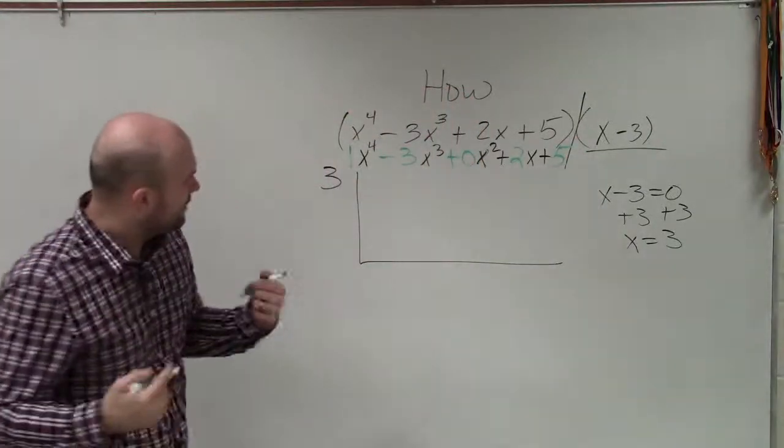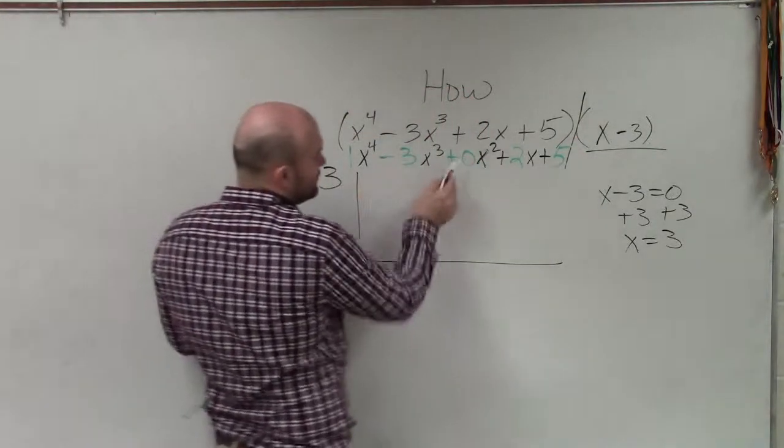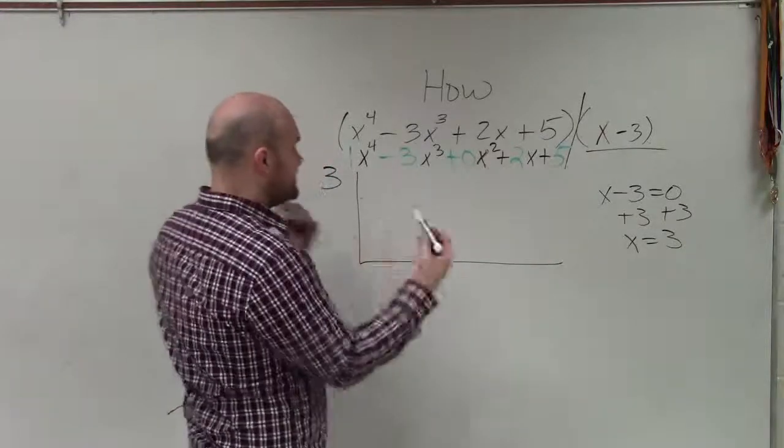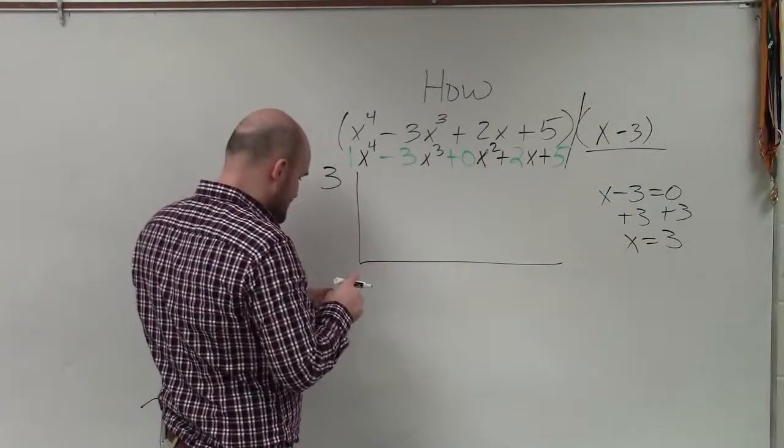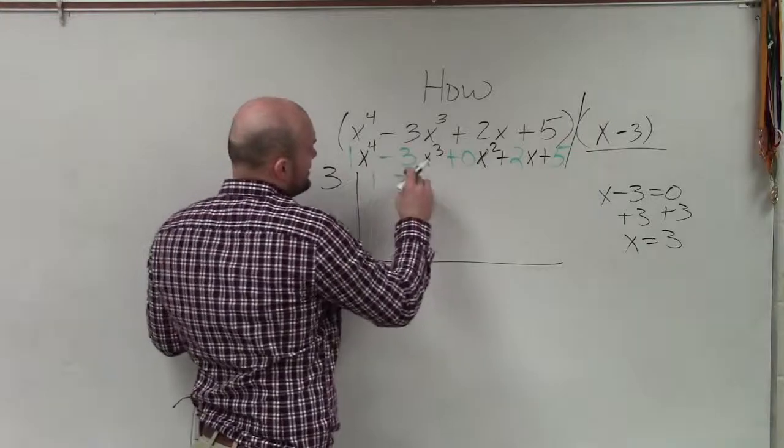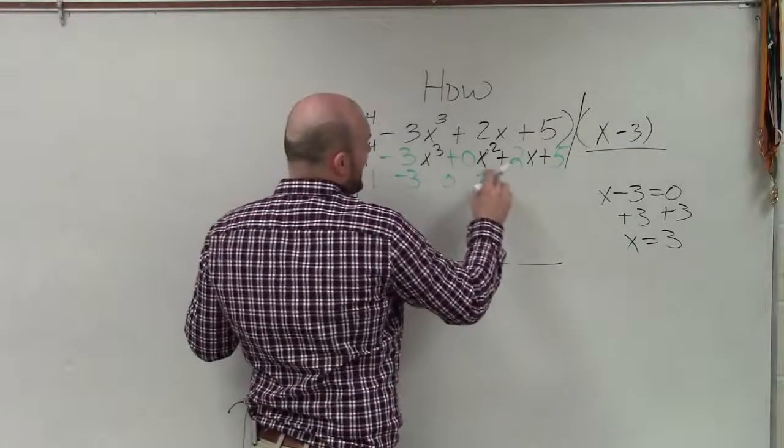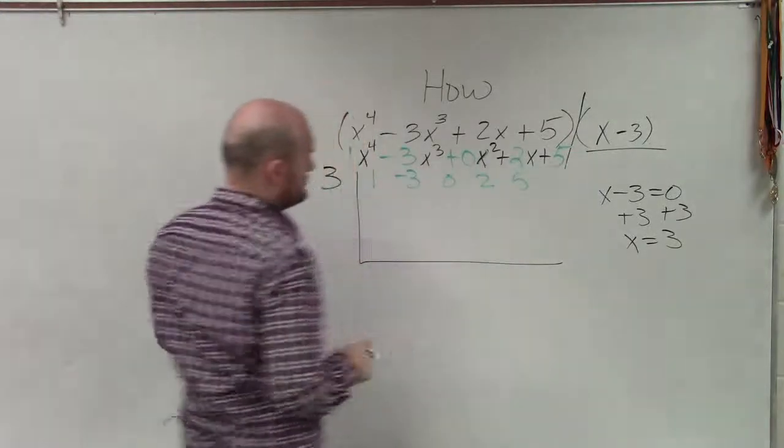So basically, what I want you guys to see is I've taken each one of these, and 0 times x squared is just 0, right? But it's very important because when applying synthetic division, I need to take each of these numbers, and I'm going to list them on my little grid.